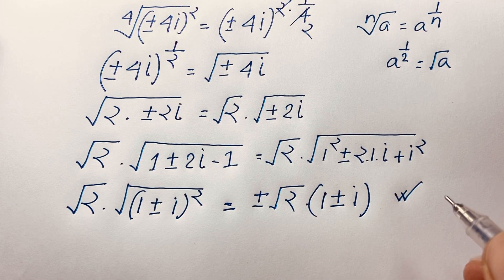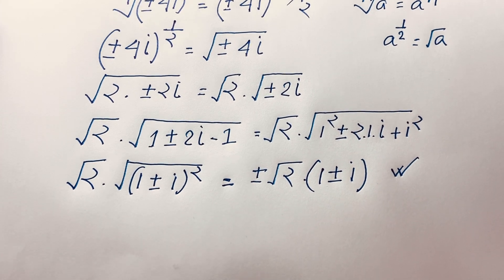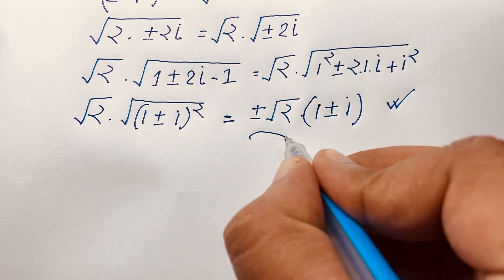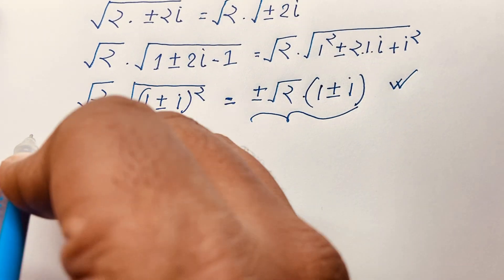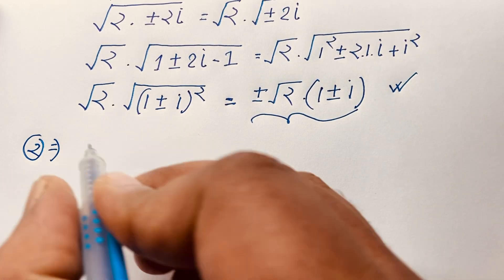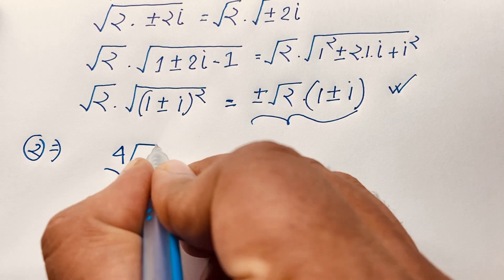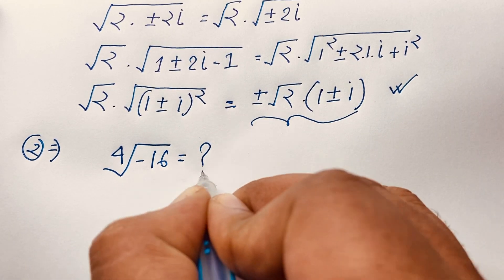Cancelling the square root with the square, our final answer is ±√2 · (1 ± i). This is the complete answer for Method 1. Now I will solve using Method 2.